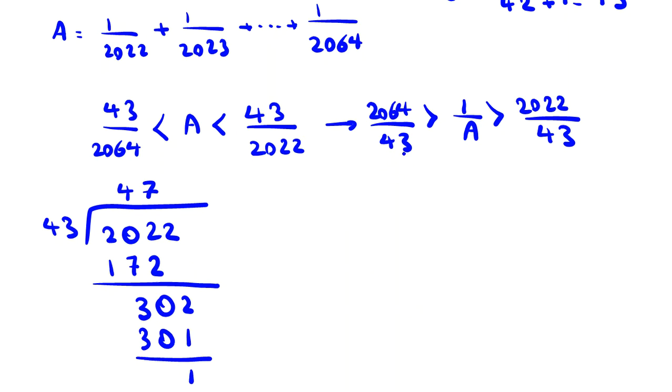So it will be what? This side, it will be 47 point something. 1 over A, 1 over A is greater than 47.